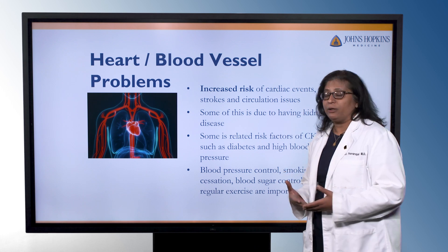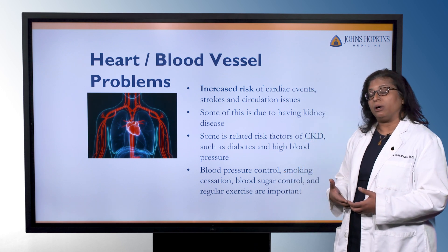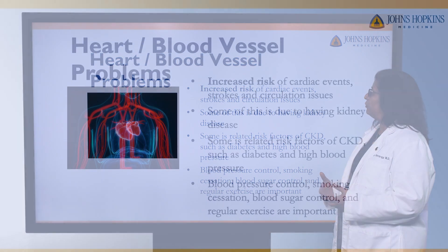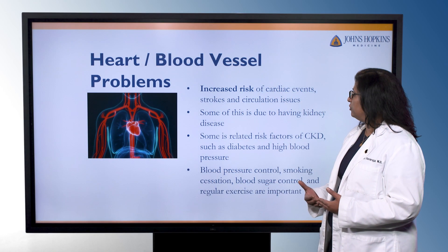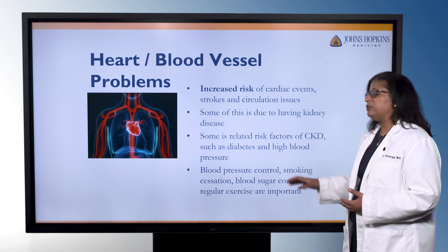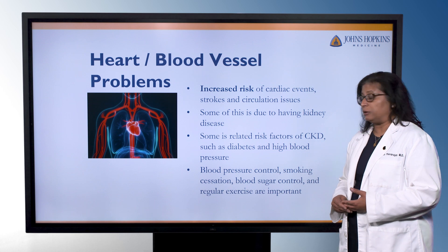There is a higher incidence of heart and blood vessel problems with people who have kidney issues — increased risk of cardiac events, stroke, and circulation problems. Some of this is due to the overlap of risk factors. Diabetes and high blood pressure are the top causes of kidney disease, and both are associated with strokes, heart attacks, and circulation issues. Some of it is also related to just having kidney issues alone.